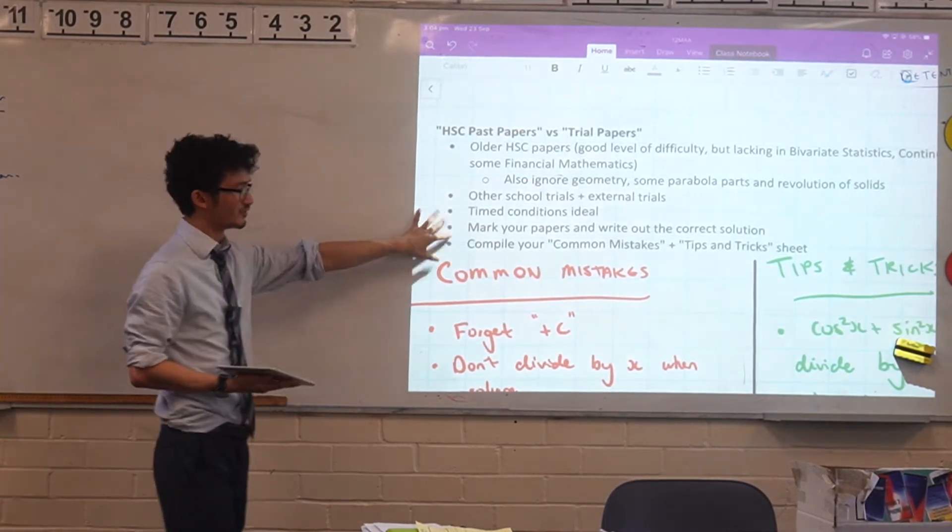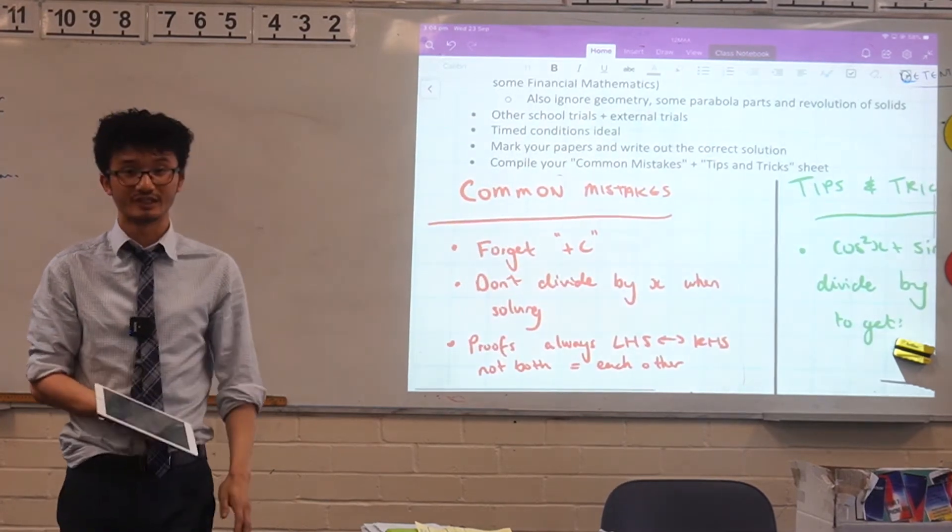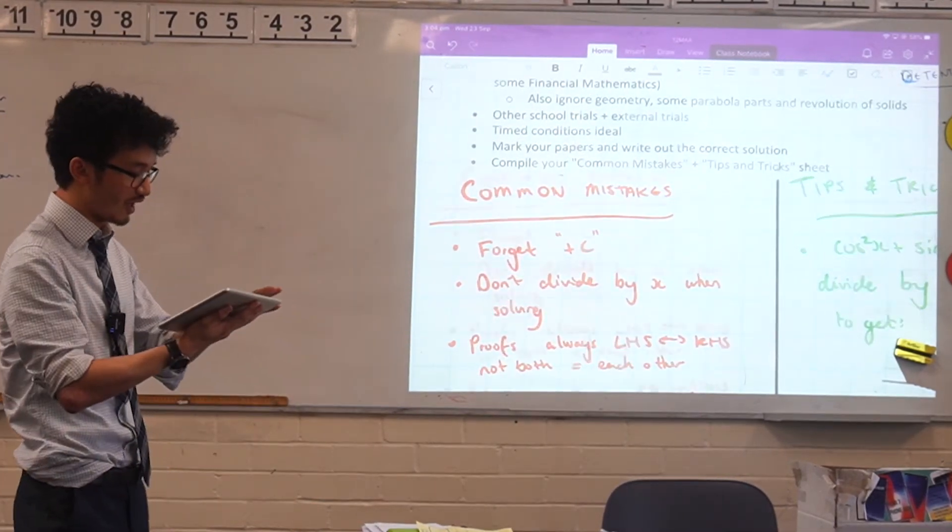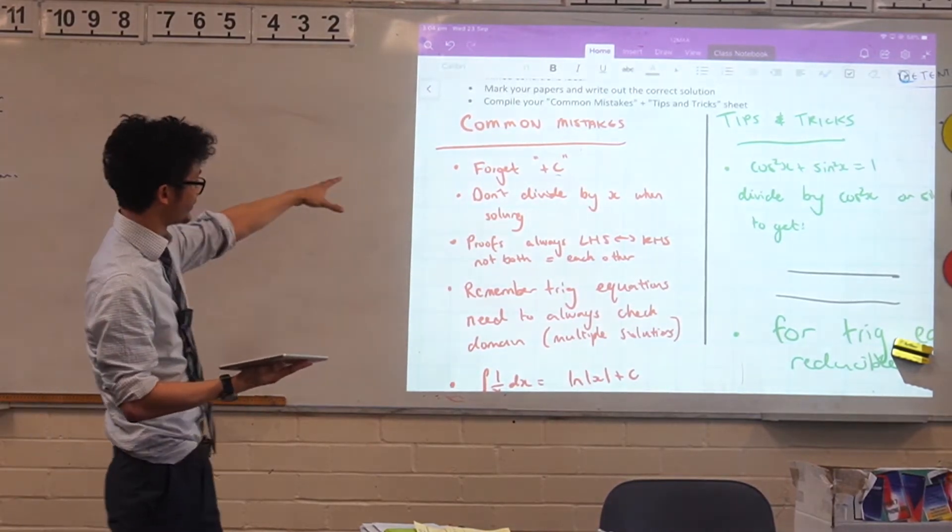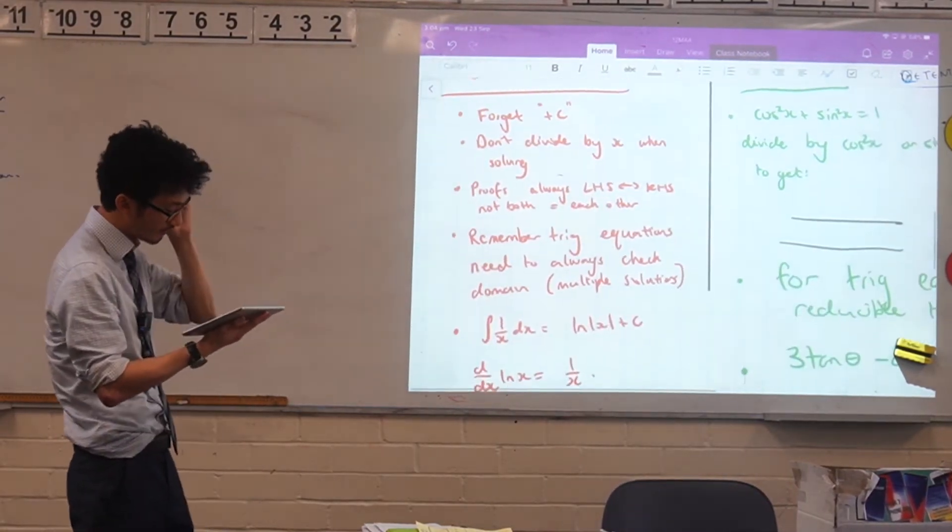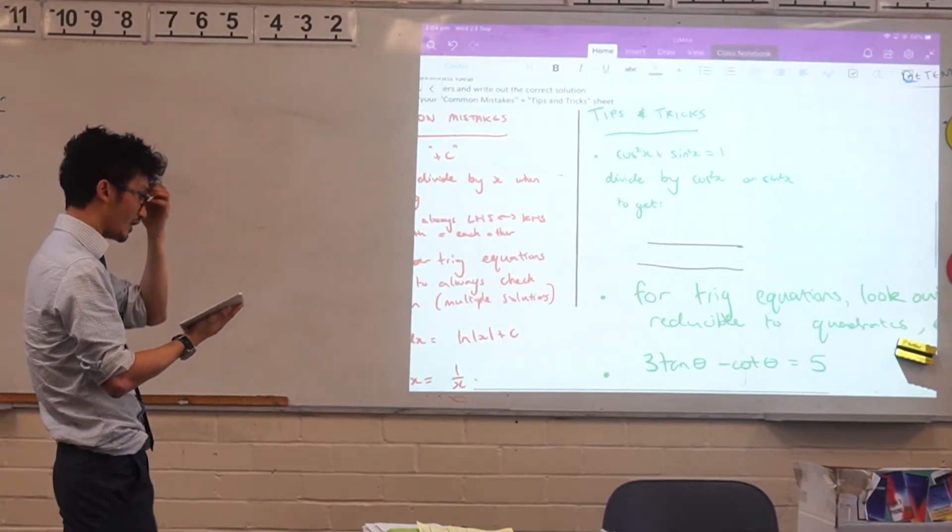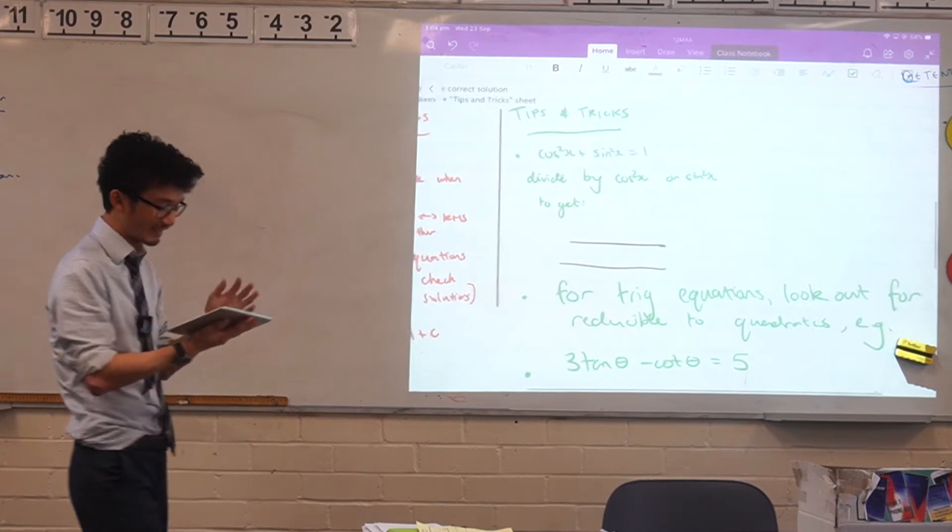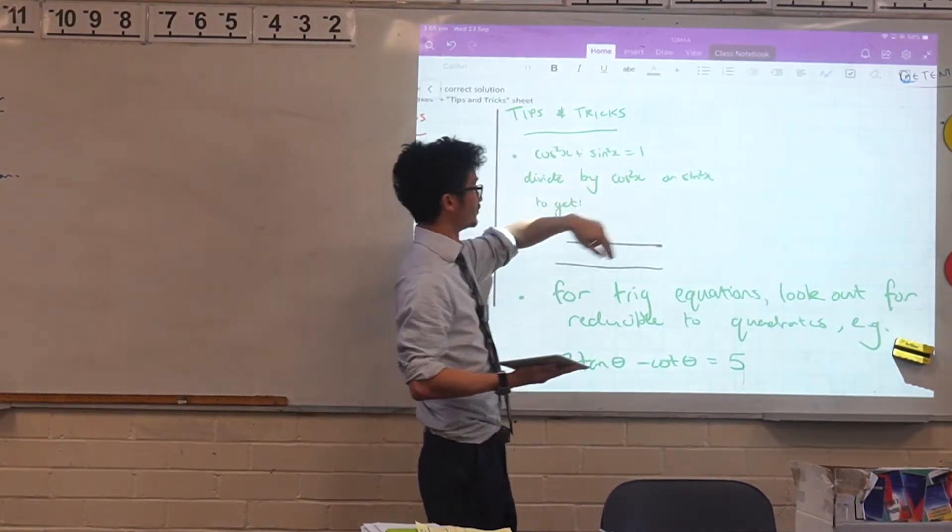As always, you should mark your papers, write any correct solutions. And I think this is the best time to be doing your common mistakes and tips and tricks sheets. So I've gone through a few common mistakes before with you guys, but here's some examples of things to look out for. And tips and tricks. These aren't things that are mistakes exactly, but these are things that can make things a bit quicker. For example, your cos squared and sine squared equals to one, the sum of those equal to one identity is on your formula sheet.